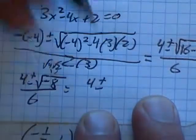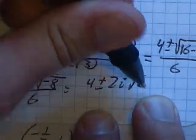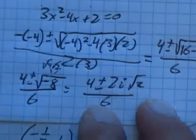The square root of 4 is 2, so this is going to be 4 plus or minus, the square root of 4 is 2 i, because it's negative 8, root 2 over 6, and I'm almost done.